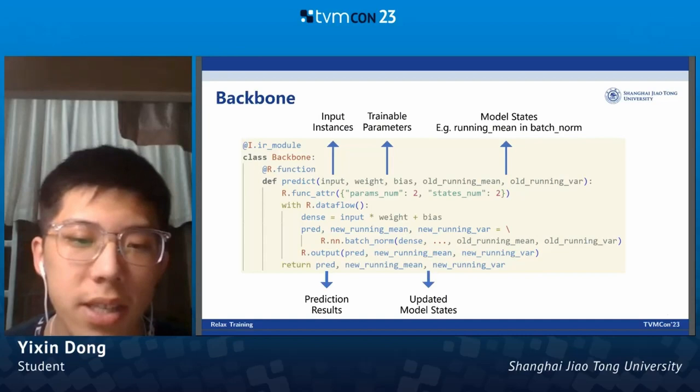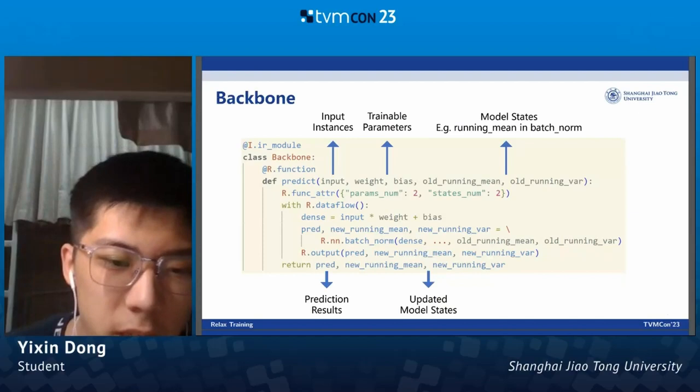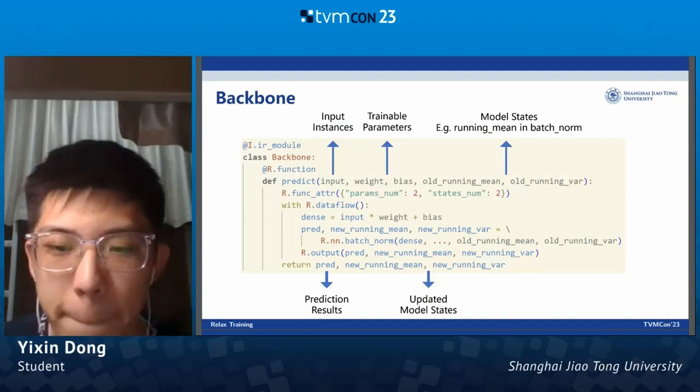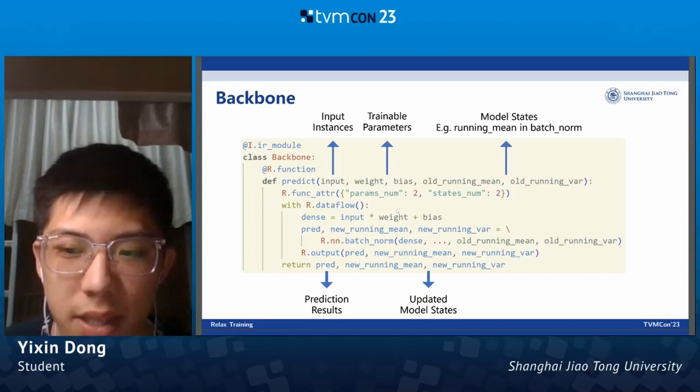Let's look at the central concept in our training workflow — that is the backbone. The backbone module is an IR module that contains a function named predict. The predict function contains only one data flow block, which performs the common computation in a deep learning model. The predict function has a couple of attributes, including the parameter number and the state number. The input of the function contains three parts: the input of the model, the trainable parameters of the model such as weight and bias in a linear layer, and the model states.